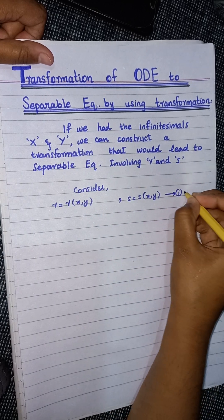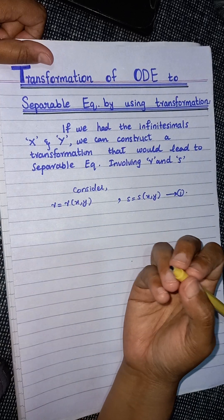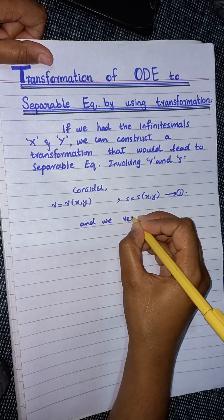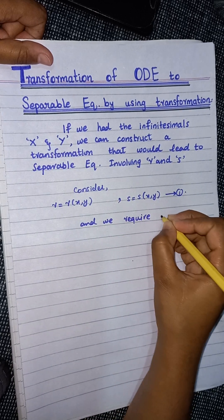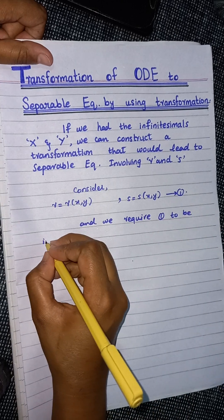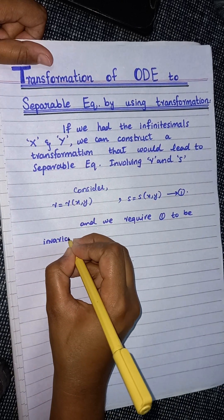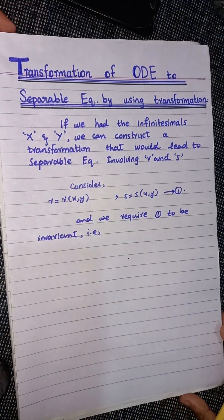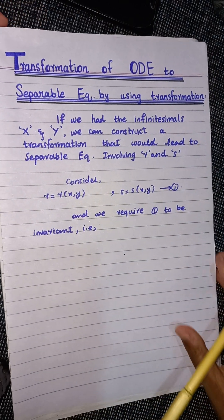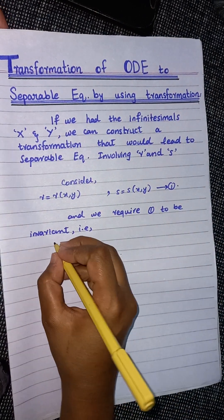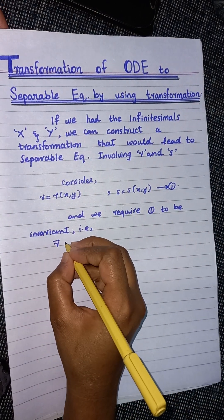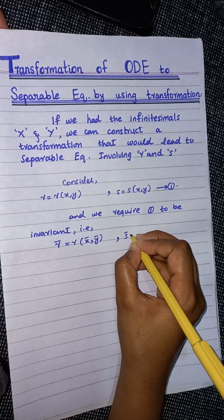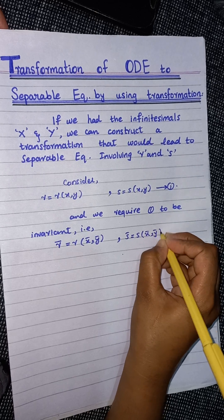Say this is equation number one. We require that this transformation is invariant. In the previous lecture, we discussed that if we are to show that a given transformation is invariant, then we have to write it as: r̄ equals r(x̄, ȳ) and s̄ equals s(x̄, ȳ).